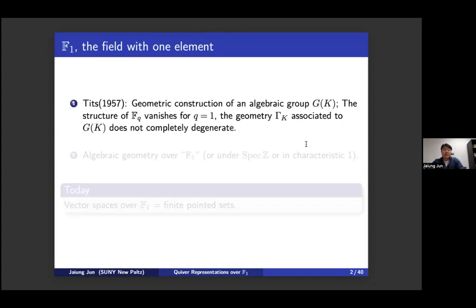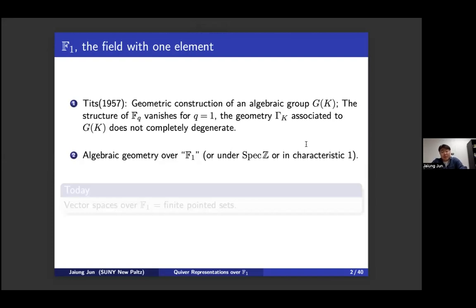There are two motivations for geometry over the field with one element. The first started with Jacques Tits when he was providing a geometric construction of an algebraic group. He noticed that the algebraic structure of a finite field completely degenerates when q goes to one, but the geometry he constructed does not completely degenerate. He suggested this degenerate geometry should be built on a mysterious field of characteristic one.